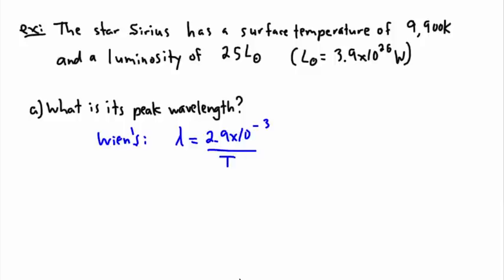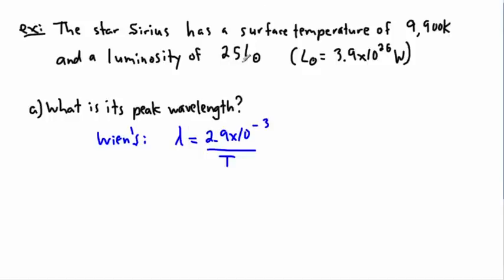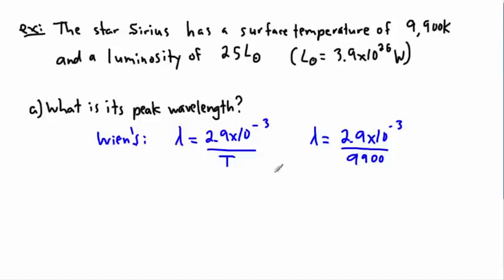Now I'm going to need to use my calculator here. What we're going to do is use this concept and solve for lambda — that's actually pretty straightforward. In this case, this is going to be equal to 2.9 × 10⁻³ divided by 9,900. And therefore we're going to get the peak wavelength — I'll call it lambda max.